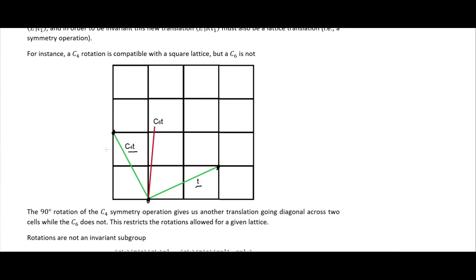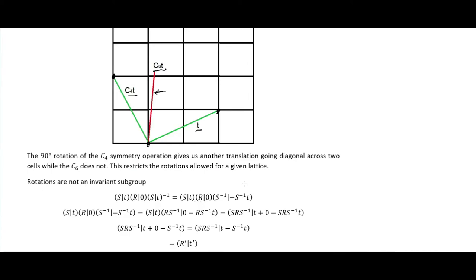So we have a translation T in the lattice, and when we rotate it we need another valid lattice translation. We can see that rotating with C6 gives us a vector — shown in red — which is not another translation in this lattice. Only a 90-degree rotation using C4 symmetry gives us another valid lattice translation going diagonally. This restricts the rotations allowed for a given lattice.